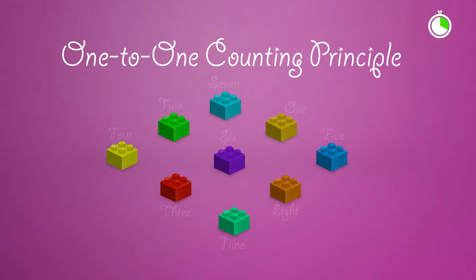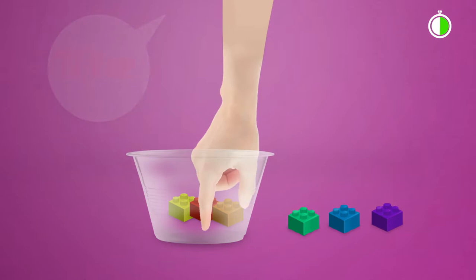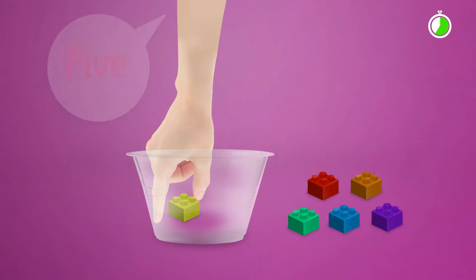Use objects the students can touch, place them in a container, and ask the students to draw them out, counting them one at a time. Experiences such as this reduce the chances of the student recounting any of the objects, which helps them to associate one number name with exactly one object.